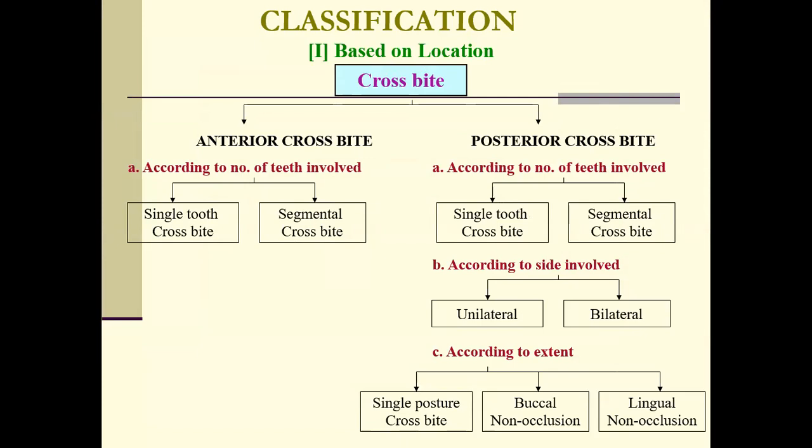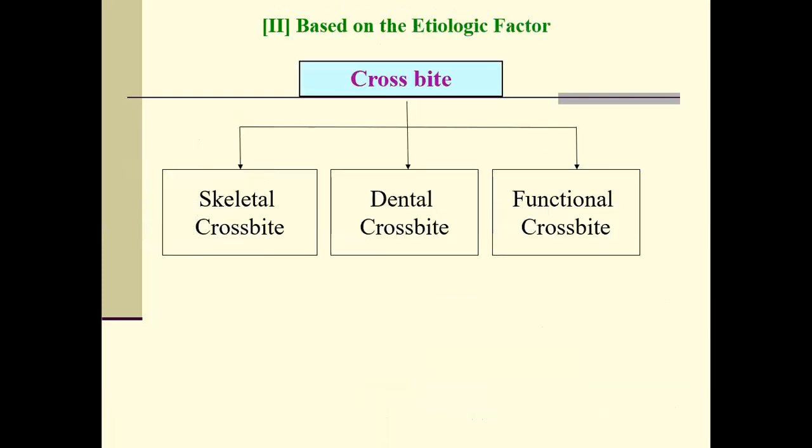How do we classify cross bites? Based on location: anterior or posterior cross bite. According to number of teeth involved: single tooth or segmental cross bite. According to the side involved: unilateral or bilateral. According to extent: simple posterior cross bite, buccal non-occlusion, or lingual non-occlusion. Based on etiological factors: skeletal cross bite, dental cross bite, or functional cross bite.